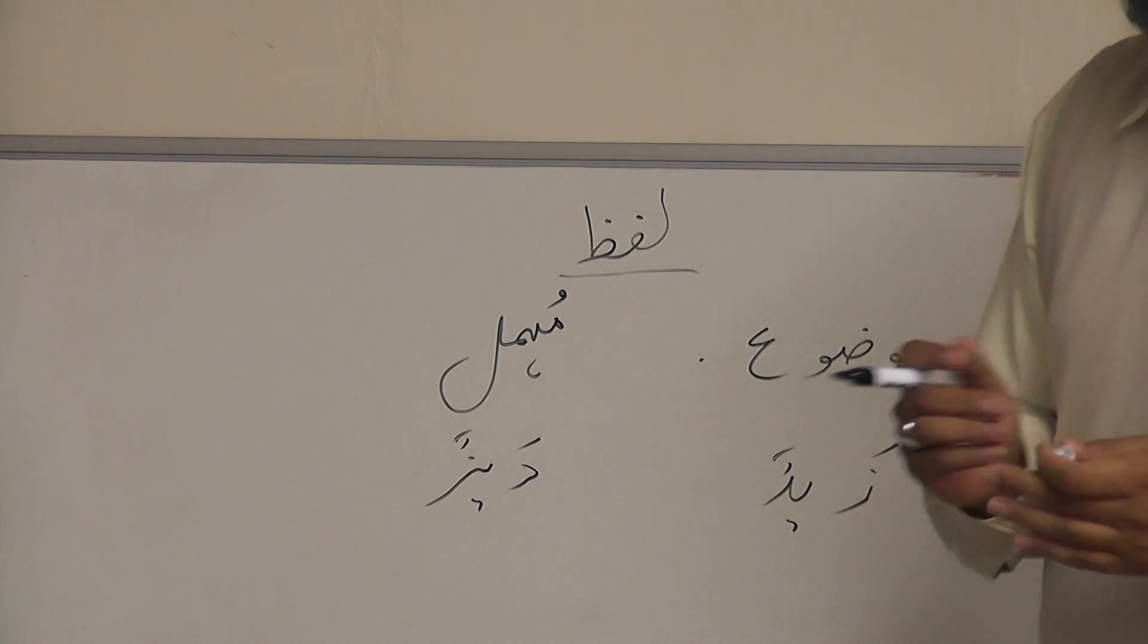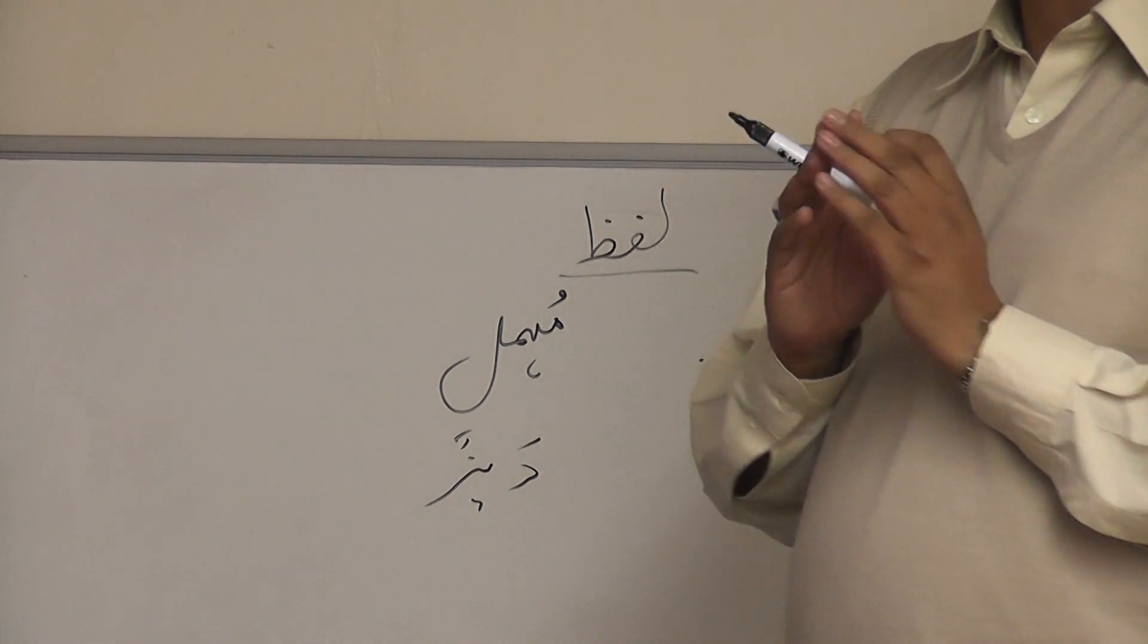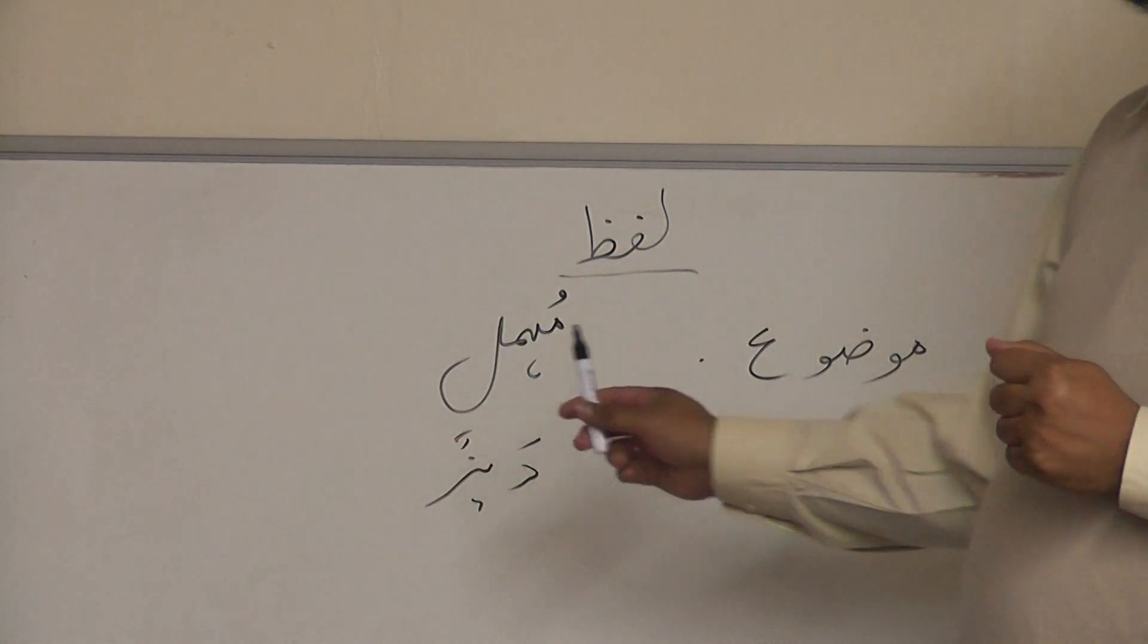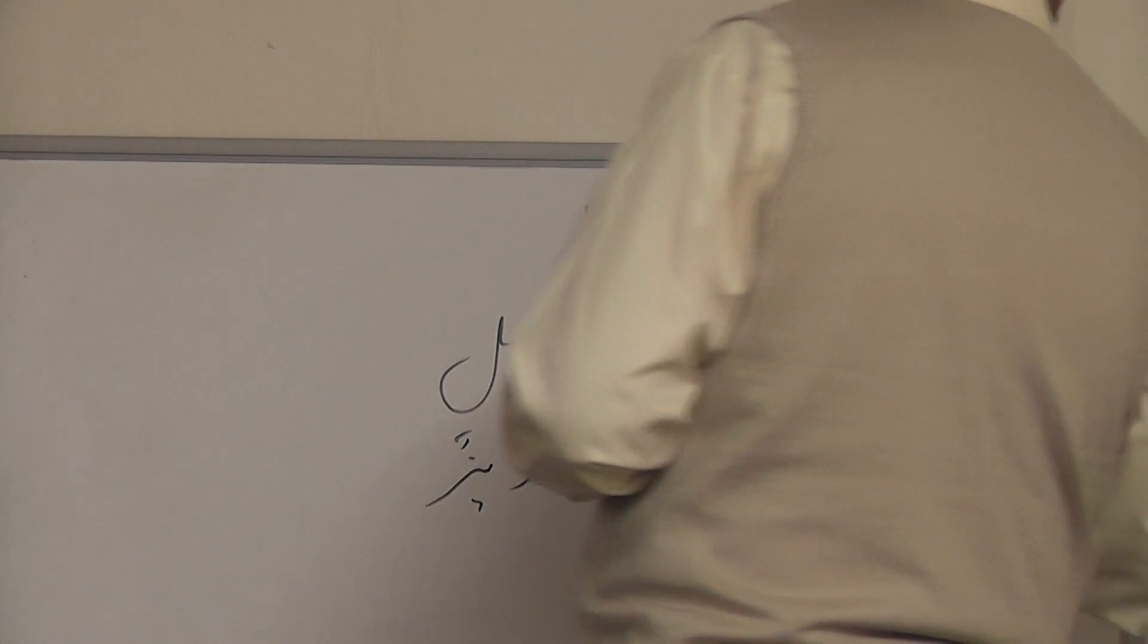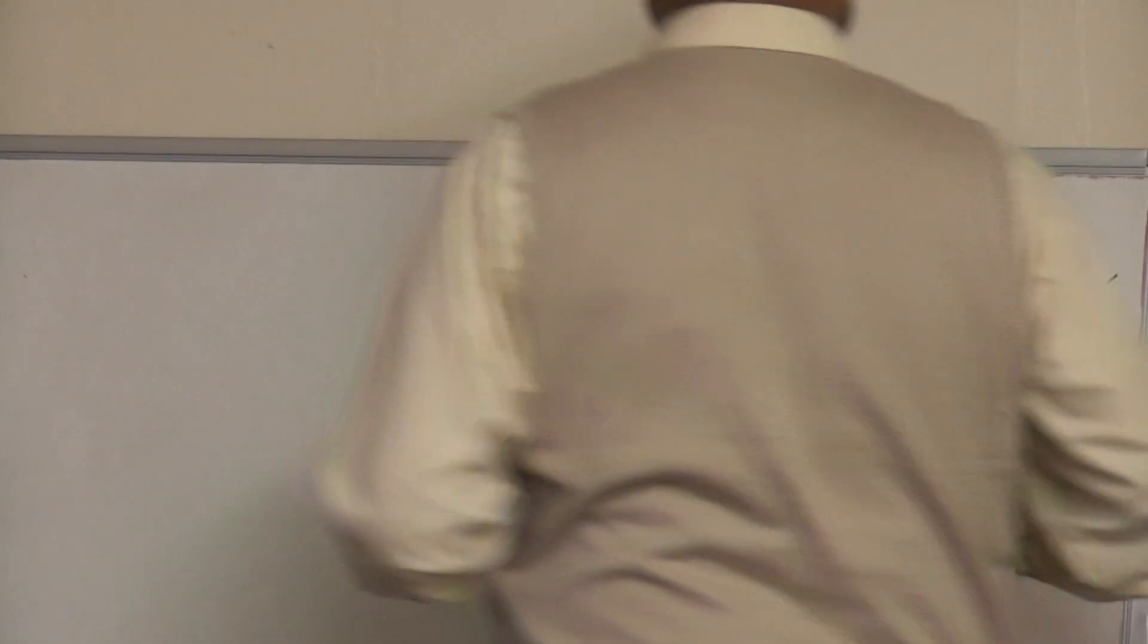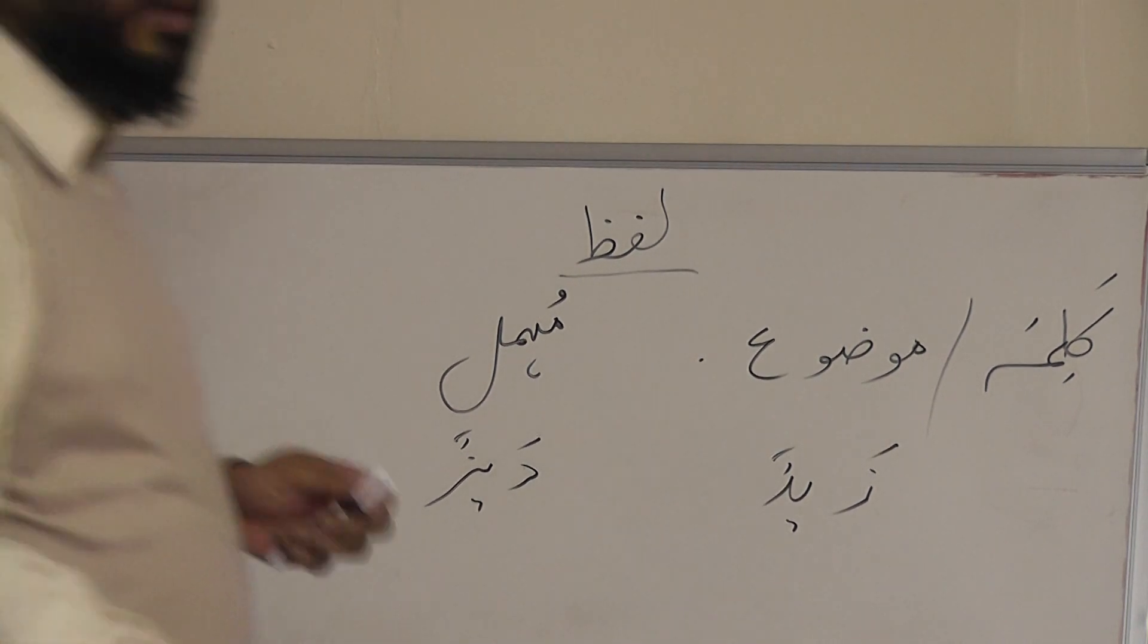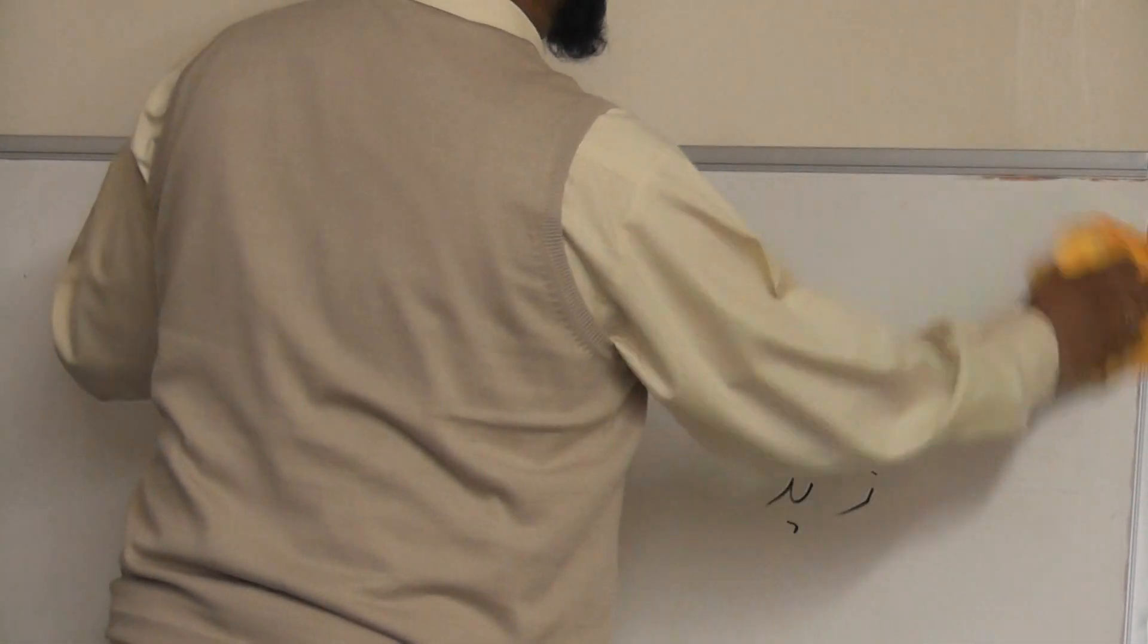So in our daily life we use many words which have no meaning. Those words which have no meanings are called MOHMAL, and the meaningful laf or word is called MAUDU. And the other name of MAUDU is KALIMAH. So meaningful word is called KALIMAH.